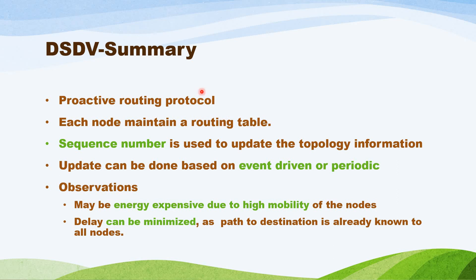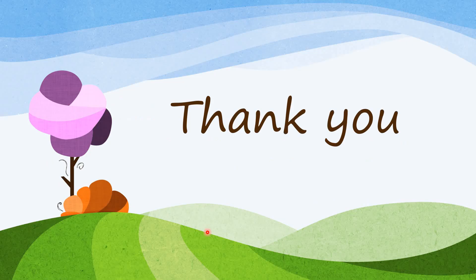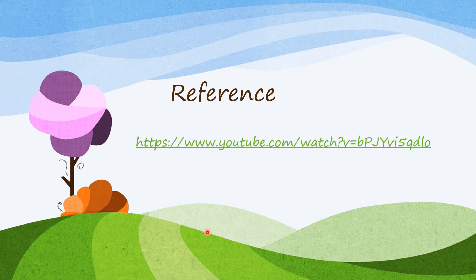In summary, DSDV is a proactive routing protocol where each node maintains a routing table. The sequence number is used to update topology and routing information. Updates can be event-driven or periodic. The protocol may be energy expensive due to high node mobility, since the entire network keeps updating the routing table continuously. However, delay is minimized because a ready-made routing table is always available — once a packet is ready, it can be transmitted immediately. Thank you for watching this video.